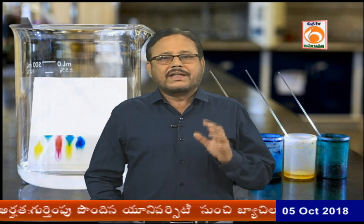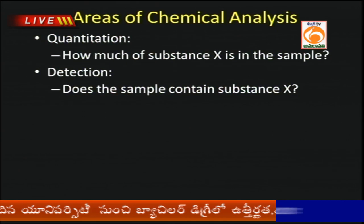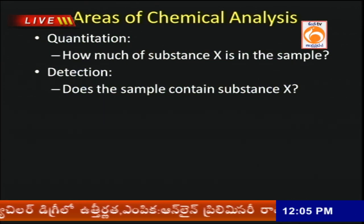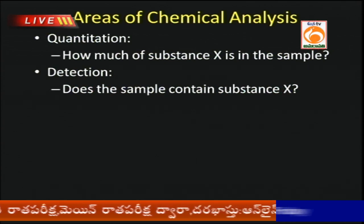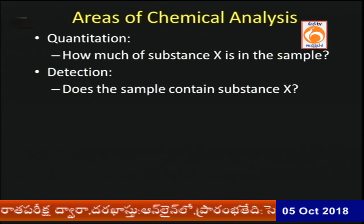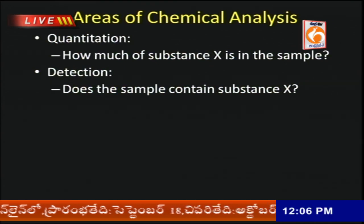This particular part is included under your elective paper: Quantitative Separations and Analysis. This is an important part of your elective paper. Under chemical analysis, different types of topics are included. The first is quantitation — how much quantity of substance is present in your given sample.